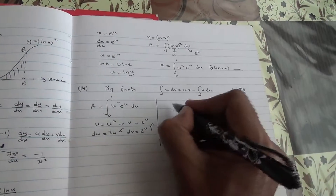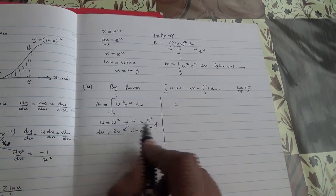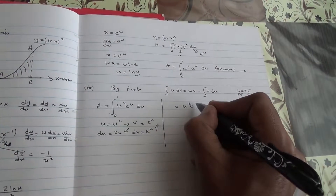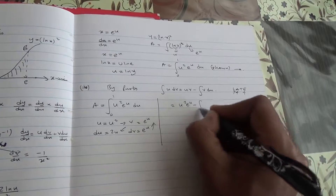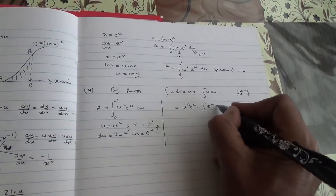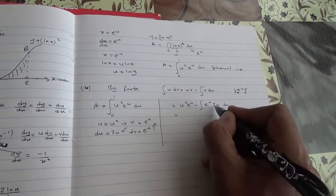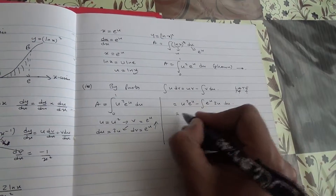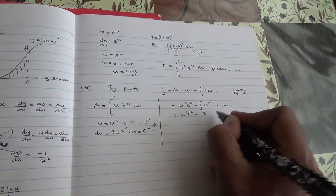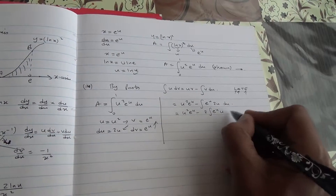So just apply it now: we're going to say it is equal to uv — u is u squared and v is e to the u — so we have u squared times e to the u, minus the integral of v du. v is e to the u, du is 2u. We can put the 2 outside because it is a constant, so we have u squared e to the u minus 2 times the integral of u e to the u du.